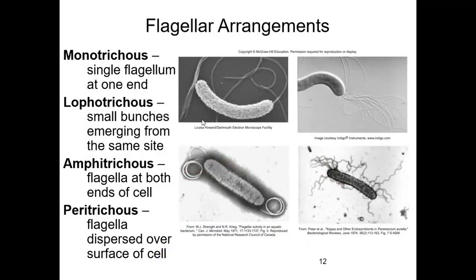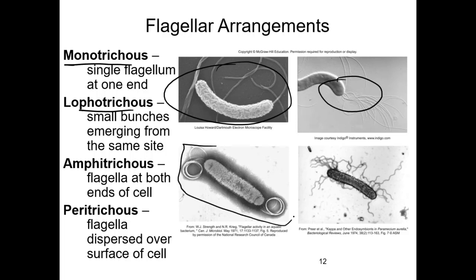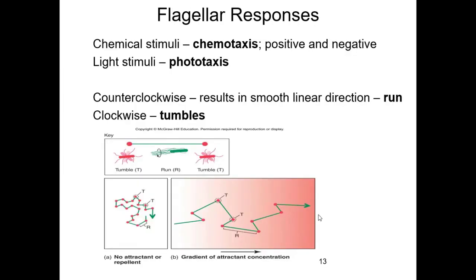Some bacteria have just one flagella, called monotrichus. If there's a bunch of flagella on one end, it's lophotrichus. If the bacteria has flagella at both ends, it's amphitrichus. My favorite is if there's flagella all over the cell, that is peritrichus. Anytime you see peri, that means many.